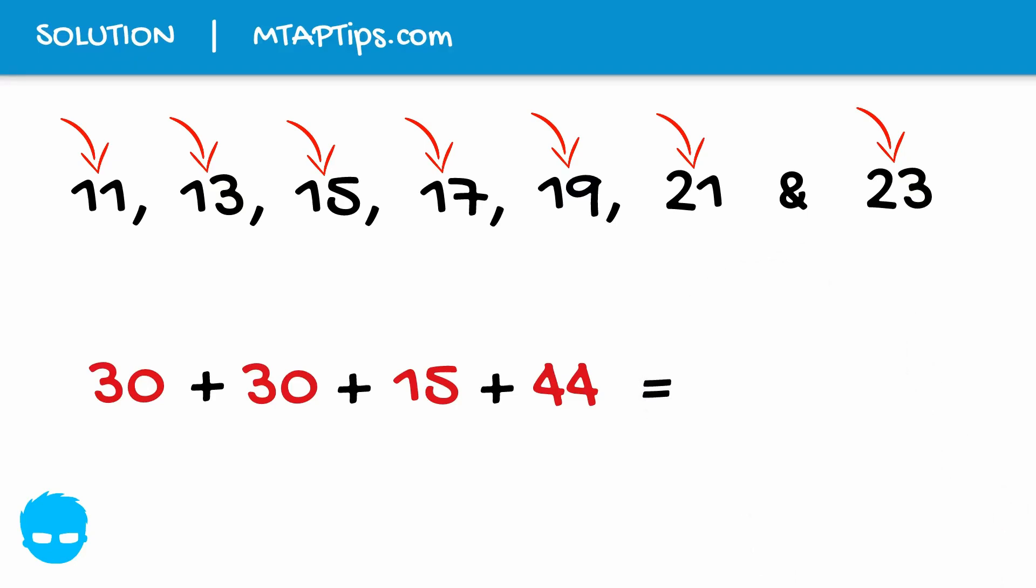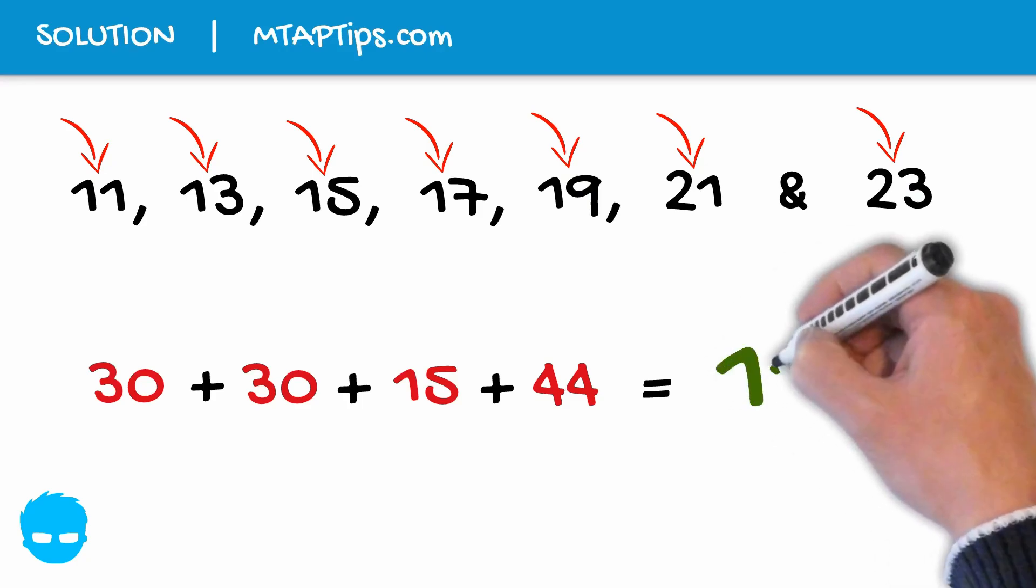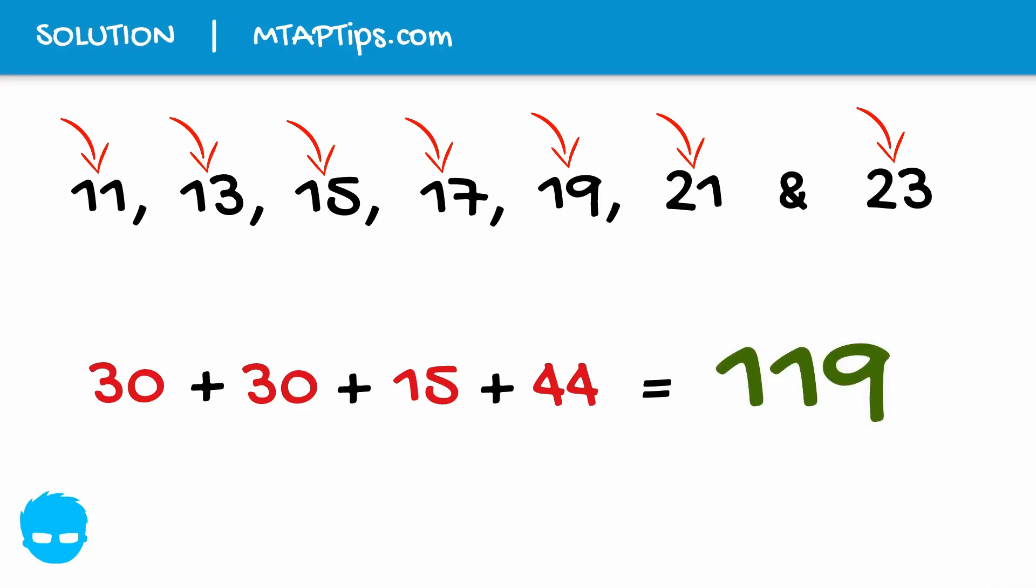Now let's add these numbers below. 30 plus 30 is 60. Plus 15 is 75. 75 plus 44 is equal to 119. So the answer is 119.